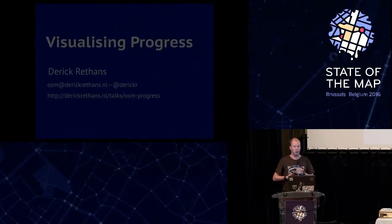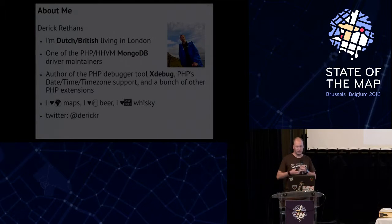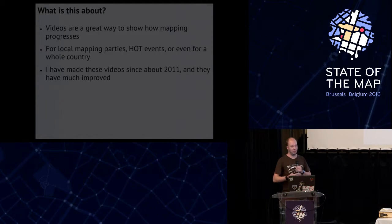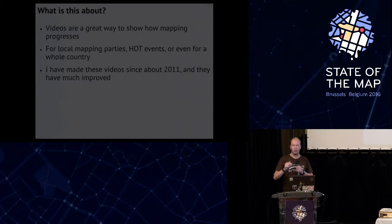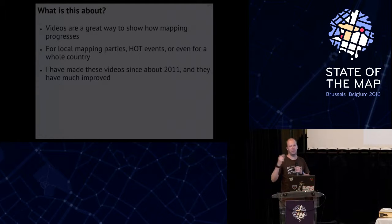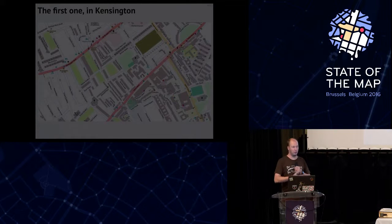The way this works is: before a mapping party, I get the data set, and then when this happens or afterwards, I use the same sort of replication mechanism that the OpenStreetMap website uses to get newer versions of the data. Because I can control when this happens, I can create frames when the data is there. I start out with getting an extract from the area, and then grab a new data set every 15 minutes using OpenStreetMap replication.